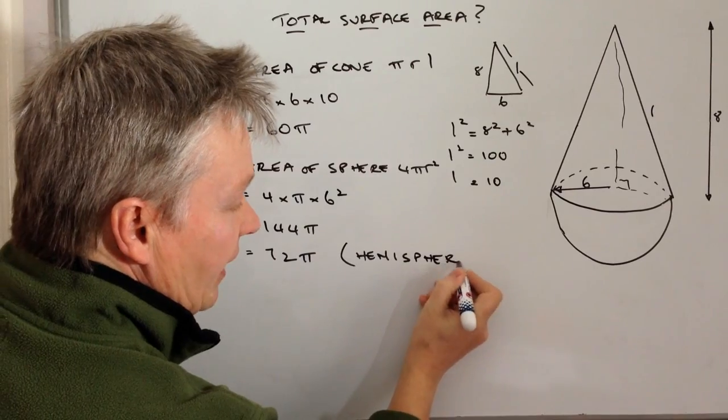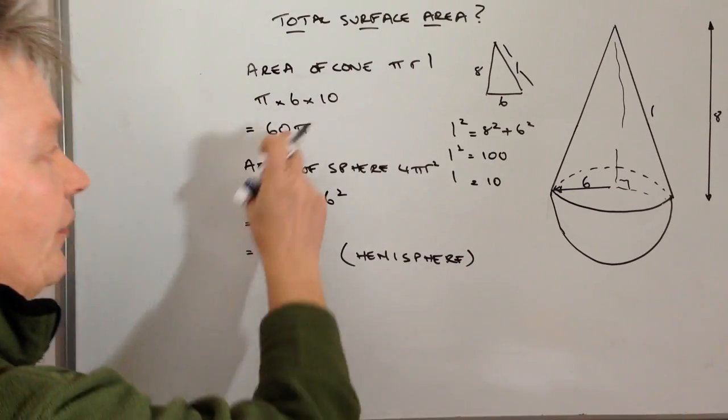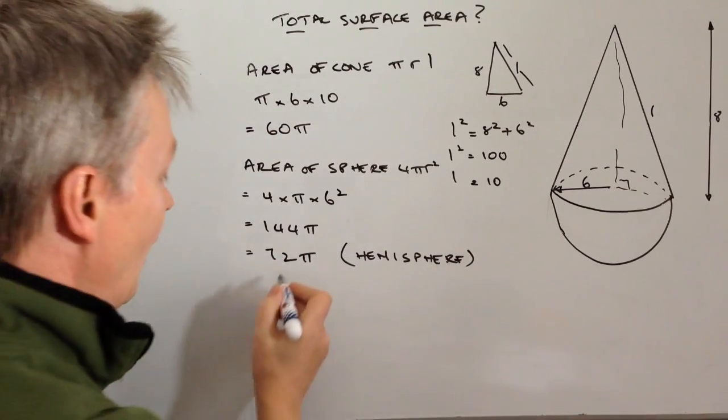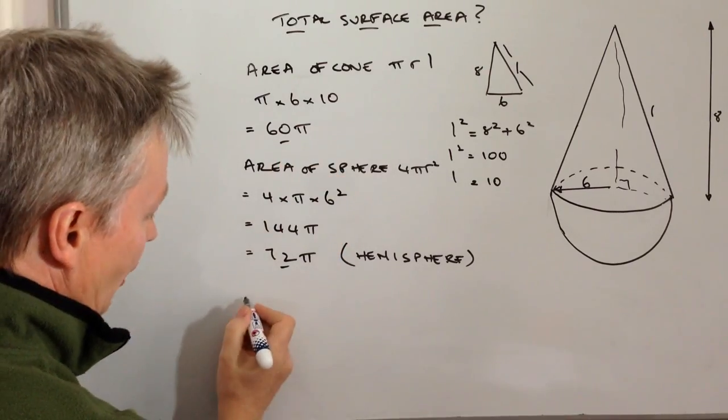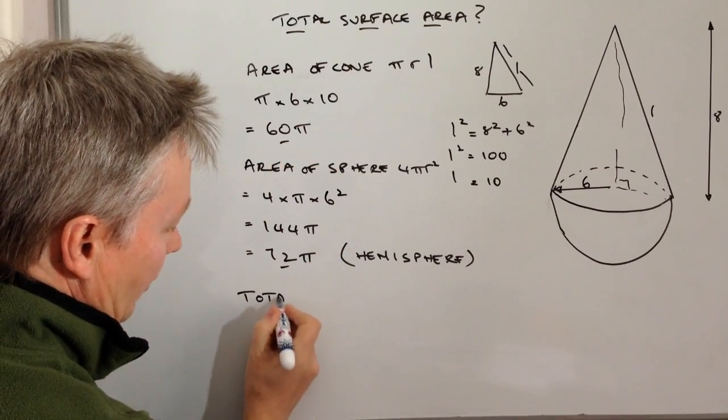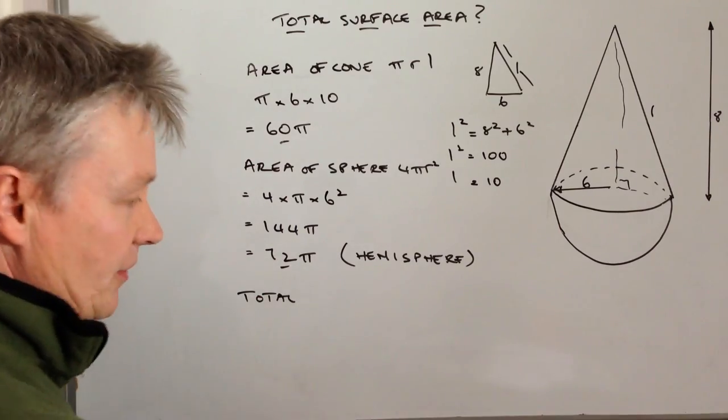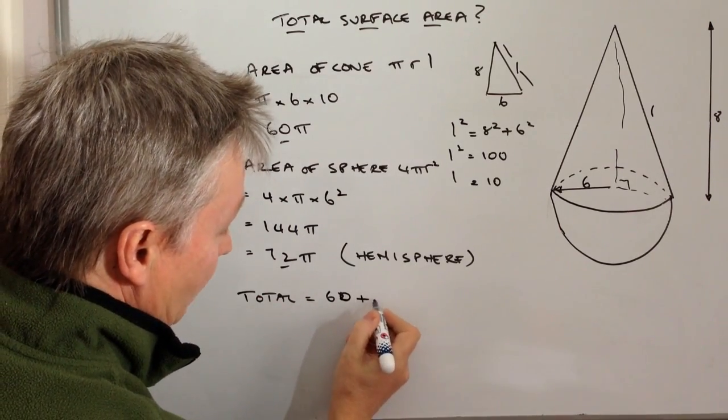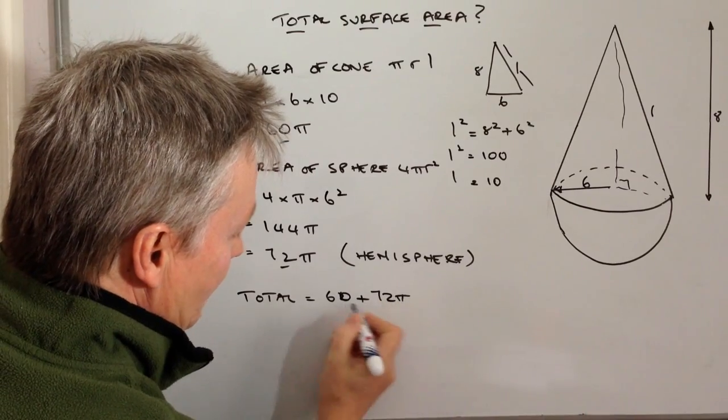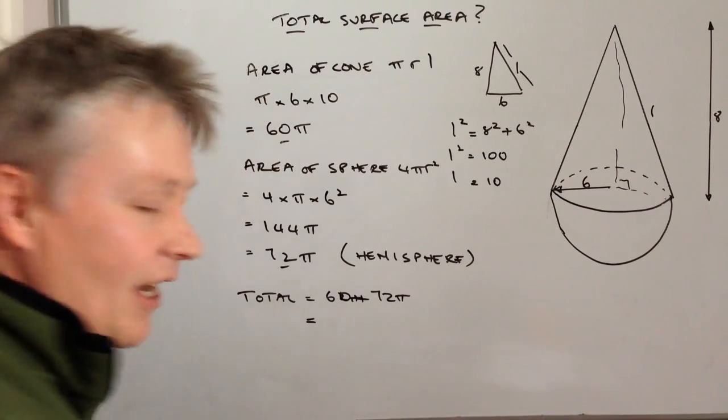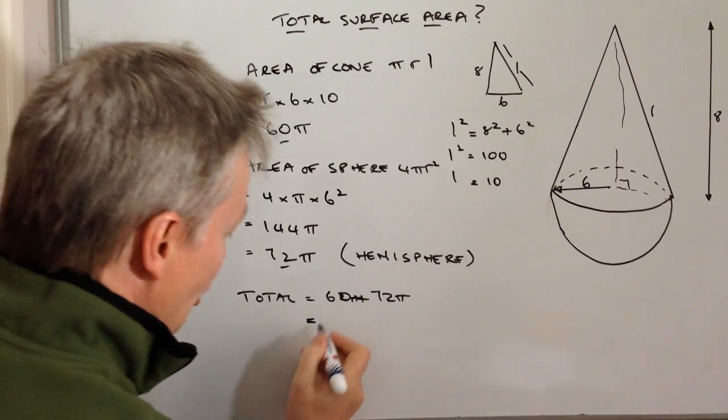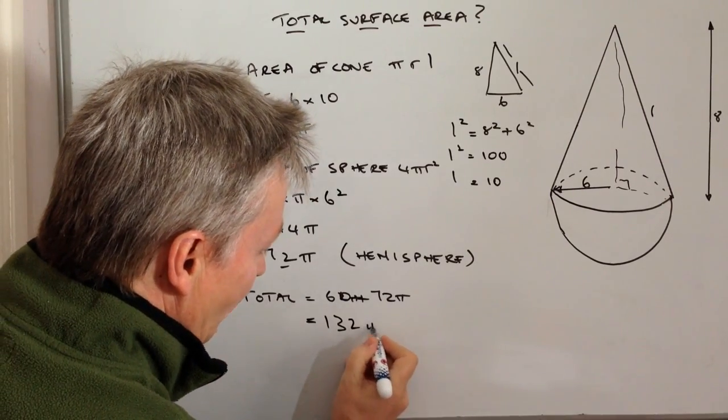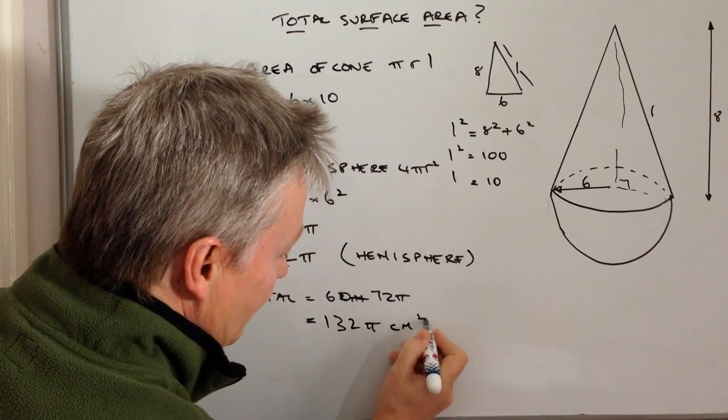And then really it's just a case of adding those two together, and that will give us the total area, which is going to be 60 plus 72π, and that's going to give us 132π cm².